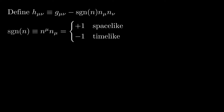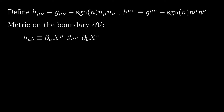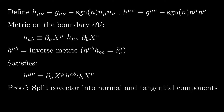To begin, we define the tensor h-mu-nu as g-mu-nu minus the sign of n times n-mu n-nu. Here the sign of n is n-mu n-mu, so it's plus 1 if n is space-like and minus 1 if n is time-like. The metric on the boundary — also called the surface metric — is h-ab equals partial-a x-mu g-mu-nu partial-b x-nu. The vectors partial-a x-mu are all tangent to the surface and therefore orthogonal to the normal n. Thus the surface metric can also be written as partial-a x-mu h-mu-nu partial-b x-nu, and the inverse surface metric satisfies h upper mu-nu equals partial-a x-mu h upper ab partial-b x-nu. This can be proved by showing that both sides agree when acting on any covector.